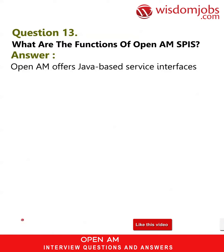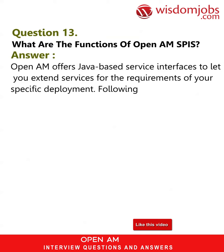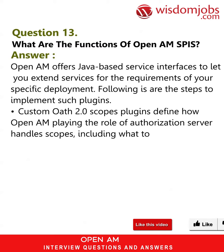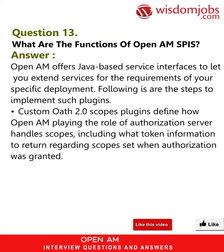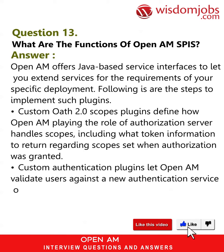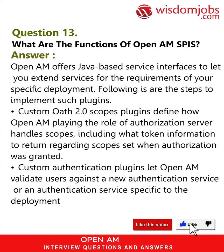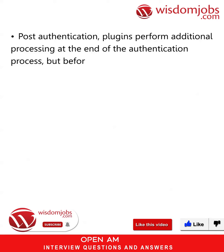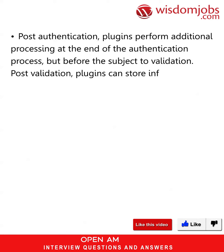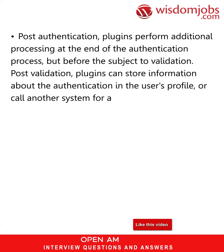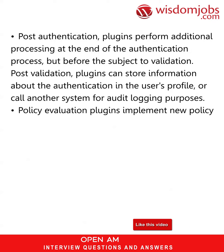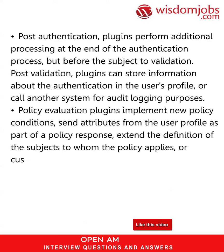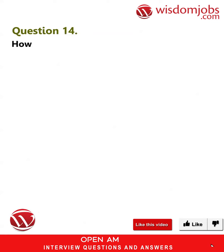Question 13: What are the functions of OpenAM SPI? Answer: OpenAM offers Java-based service interfaces to let you extend services for the requirements of your specific deployment. Plugins include: custom OAuth 2.0 scopes plugins, which define how OpenAM as authorization server handles scopes including what token information to return; custom authentication plugins, which let OpenAM validate users against a new or deployment-specific authentication service; post-authentication plugins, which perform additional processing at the end of the authentication process but before the subject is validated; post-validation plugins, which can store authentication information in the user's profile or call another system for audit logging; and policy evaluation plugins, which implement new policy conditions, send user profile attributes as part of a policy response, extend the definition of subjects to whom the policy applies, or customize how policy management is delegated.